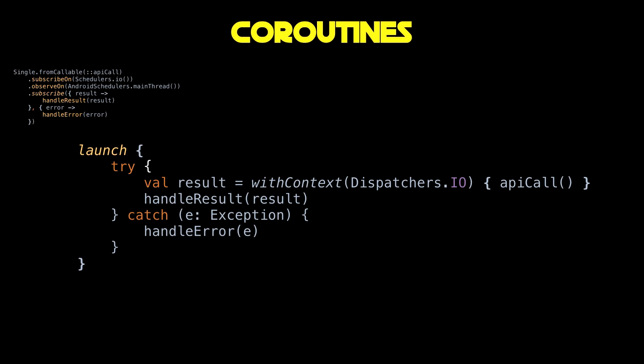What I really want you to notice here is how much like normal imperative programming this code snippet looks like. There's no chaining — it's really easy to read and follow what's going on. There's very little additional concepts to learn. You could use a normal try-catch construct, leveraging your existing Kotlin knowledge. And the way coroutines handle threading here is what makes it truly shine in this comparison.